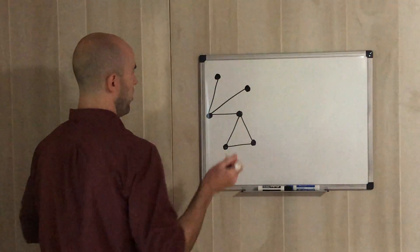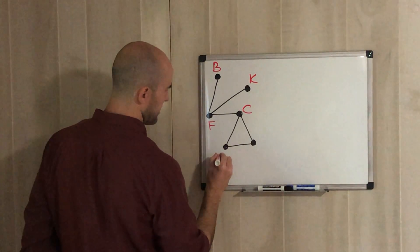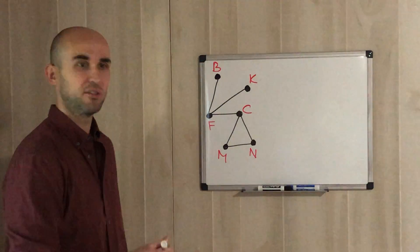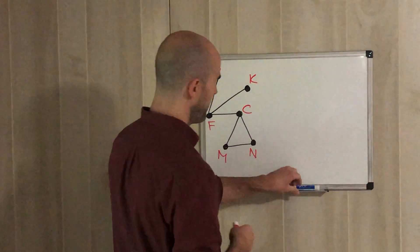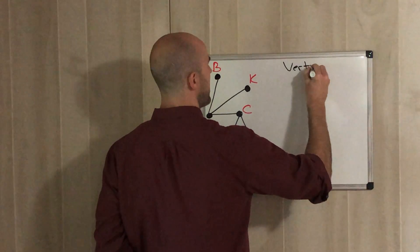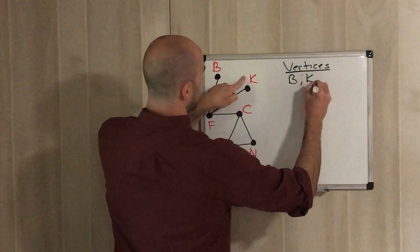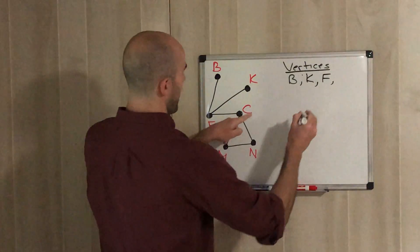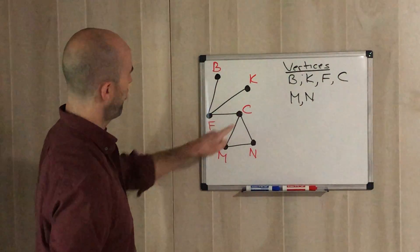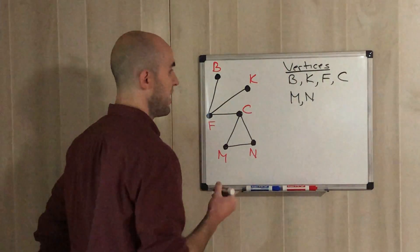Here's another vertex edge graph. We'll call the vertices B, F, K, C, M, and N. Again, it's another vertex edge graph with a bunch of vertices and edges. If I ask you what all the vertices are: B, K, F, C, M, and N — that's six vertices.